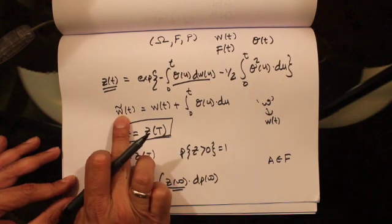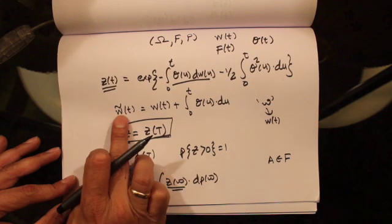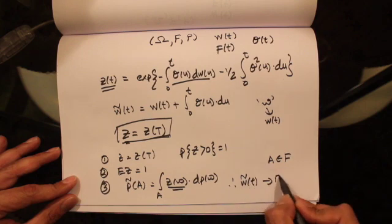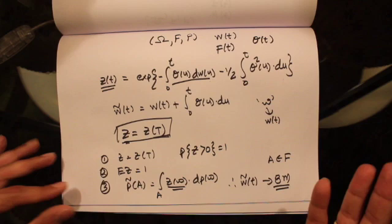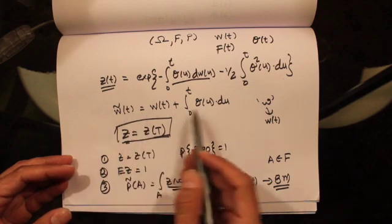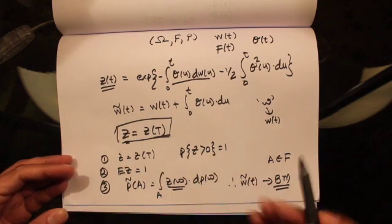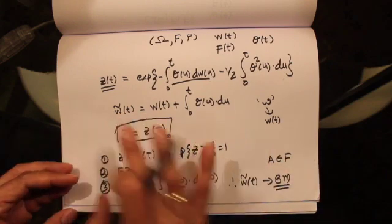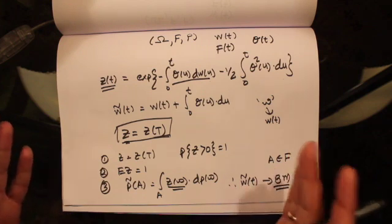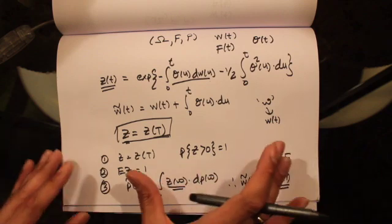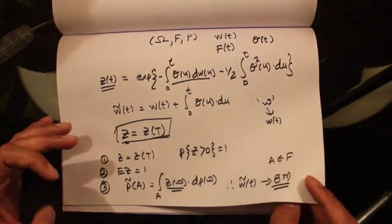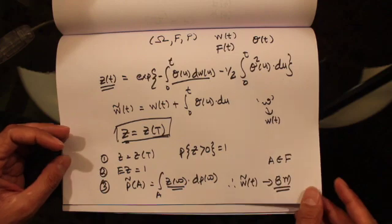...under this probability measure P-tilde, the process W-tilde(t) is a Brownian motion. We used Lévy's theorem to prove that the paths are continuous, they start at 0, they accumulate quadratic variation at 1 per unit time, and this process is a martingale under P-tilde. Hence W-tilde is a Brownian motion. This is what we discussed in the previous lecture, and now we are going to build upon this theory to come up with the Black-Scholes formula.